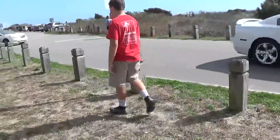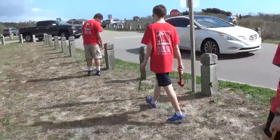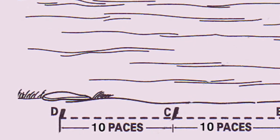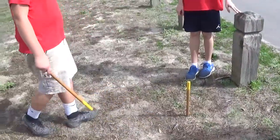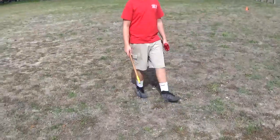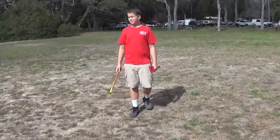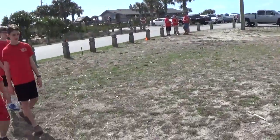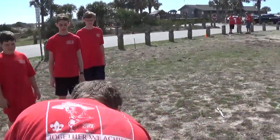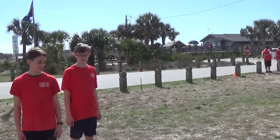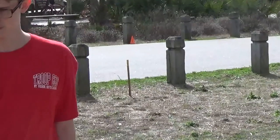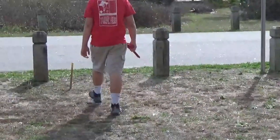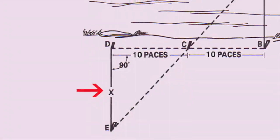Continue walking along the side of the expanse for exactly the same amount of paces, and again mark this point with another stick — let's call this stick D. Finally, walk away from the expanse at 90 degrees to the line formed by sticks D and B. When you can sight a straight line over the middle stick C to the object at point A, mark the spot with stick E. To get the width of the expanse, measure the line formed by stick E and D.